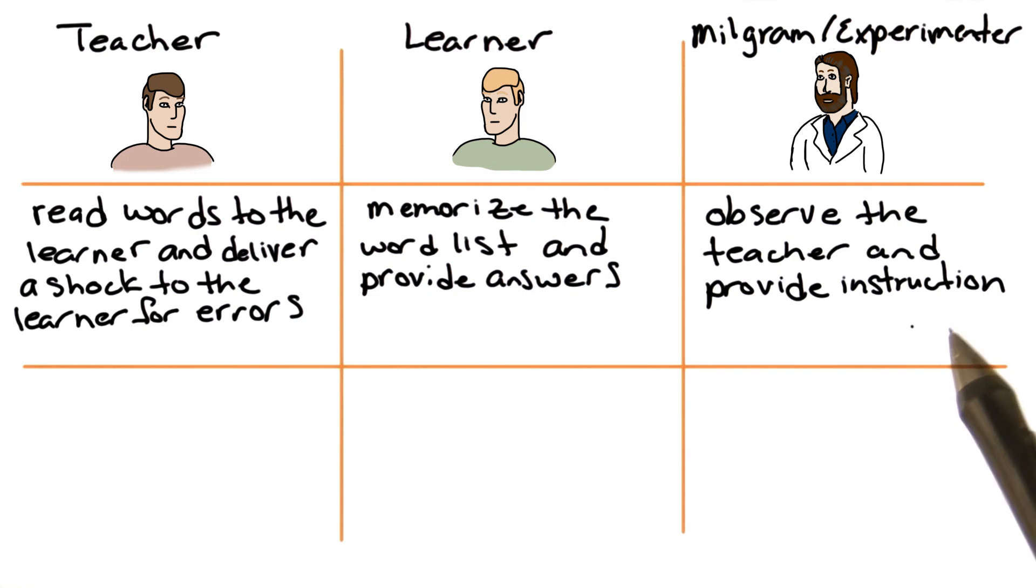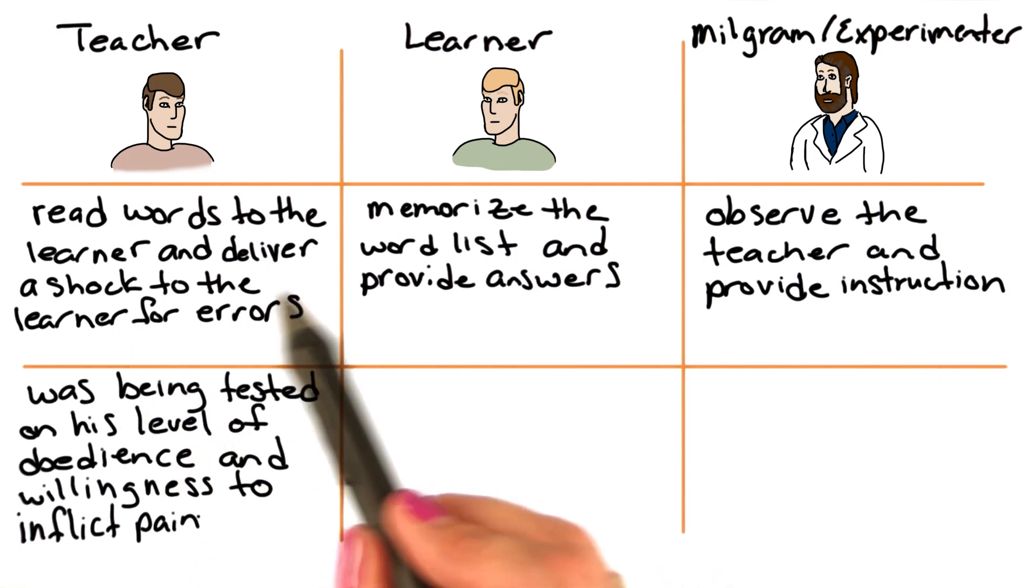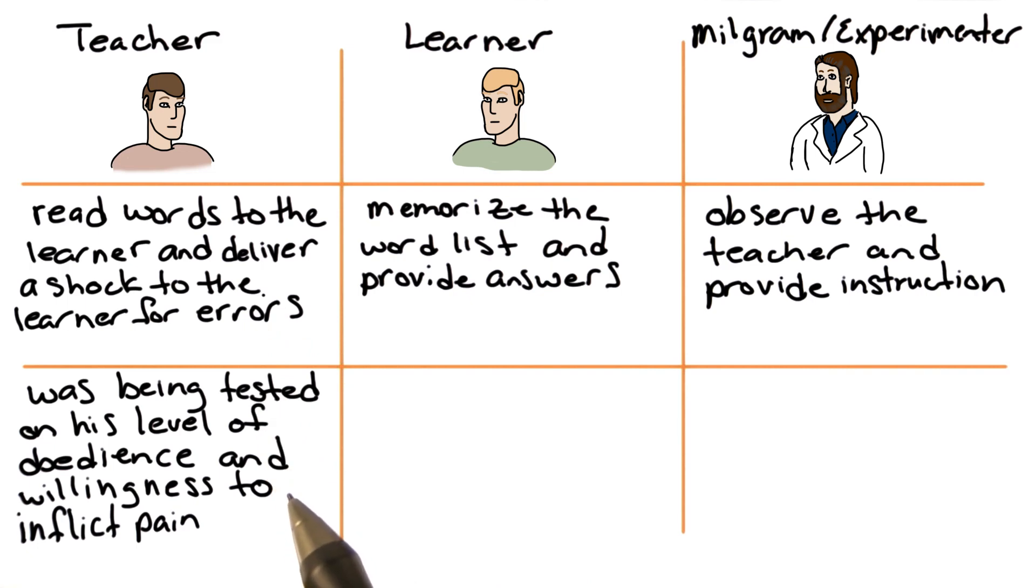The learner was to memorize those word lists and provide correct answers. And during the study, Milgram, who was the experimenter, observed the teacher and provided instruction. So here, the teacher thought that he was to read words and deliver shocks. But in fact, Milgram was testing that participant's level of obedience, as well as his willingness to inflict pain to the learner.